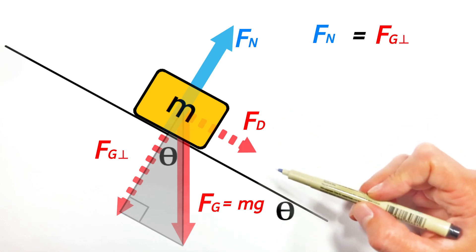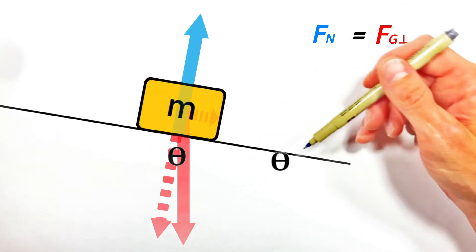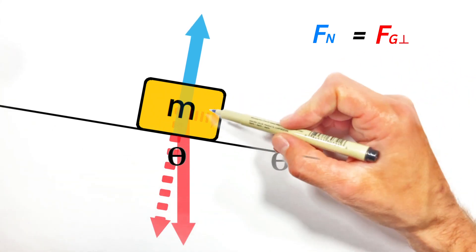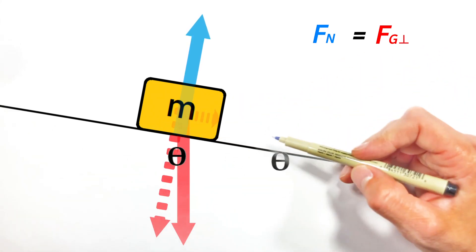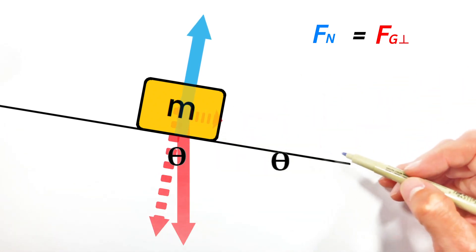I mean, imagine we were to take the angle of this hill and to decrease it, so that this theta right here got closer and closer to zero. Ultimately, what that would mean is this angle right in here would also get closer and closer to zero. These are equal angles.